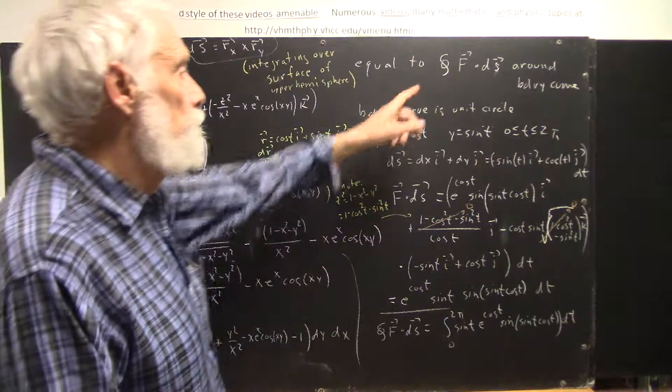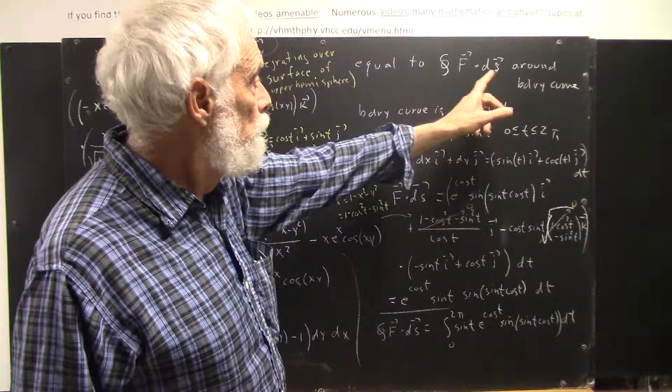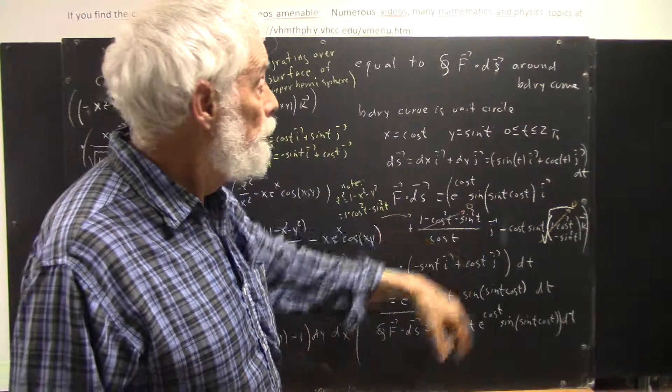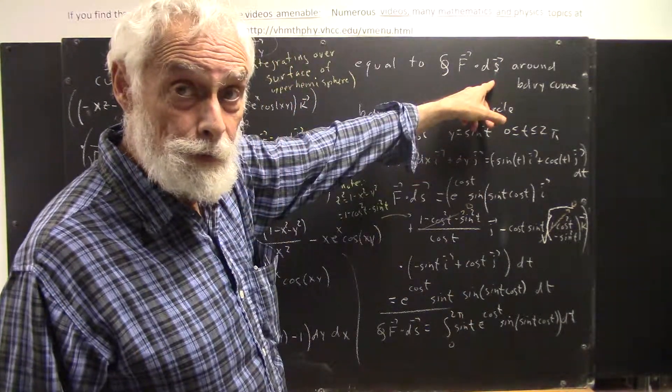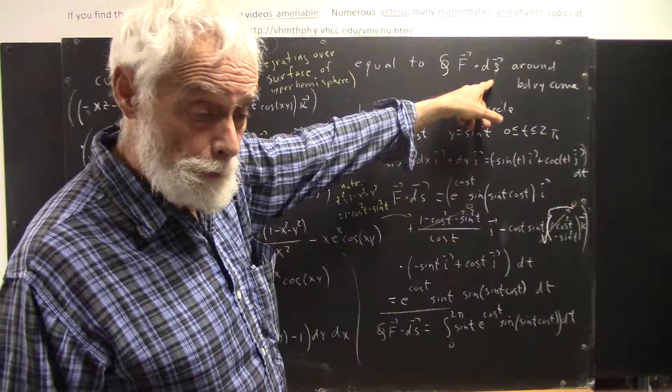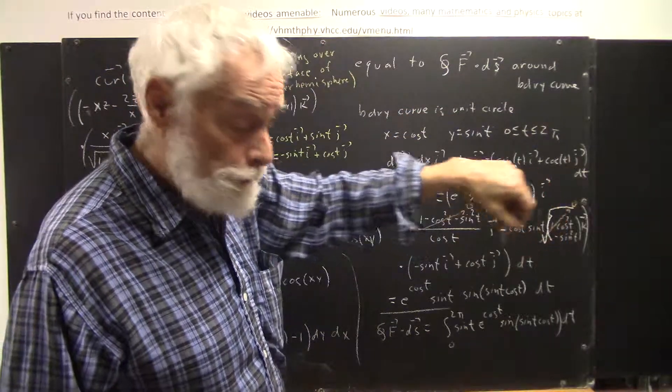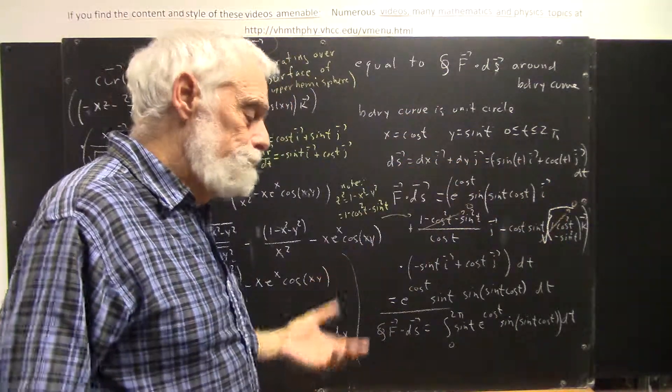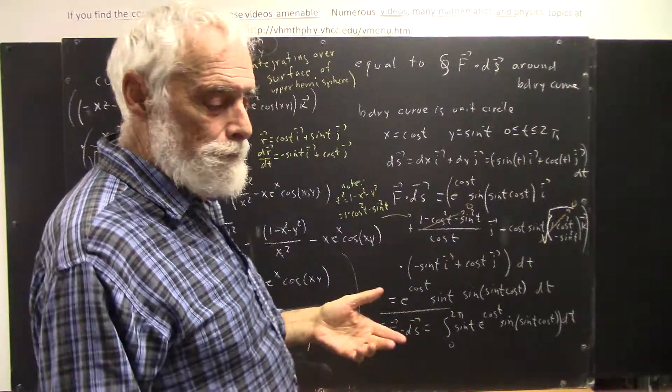The boundary of the upper hemisphere is the unit circle down in the xy plane. So, whatever we get for this integral should be equal to the integral around the closed boundary curve of just f dot ds. And, this is little s, not big s.